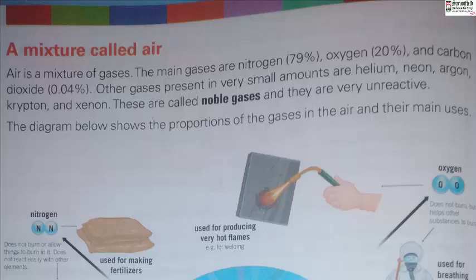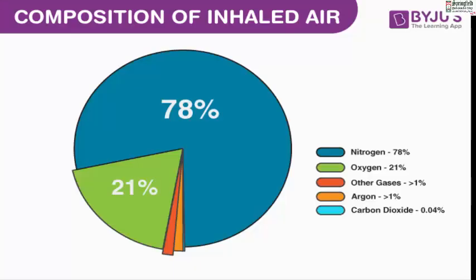Air is a mixture of gases. The main gases are nitrogen 79%, oxygen 20%, and carbon dioxide 0.04%. Other gases present in very small amounts are helium, neon, argon, krypton, and xenon. These are called noble gases and they are unreactive.